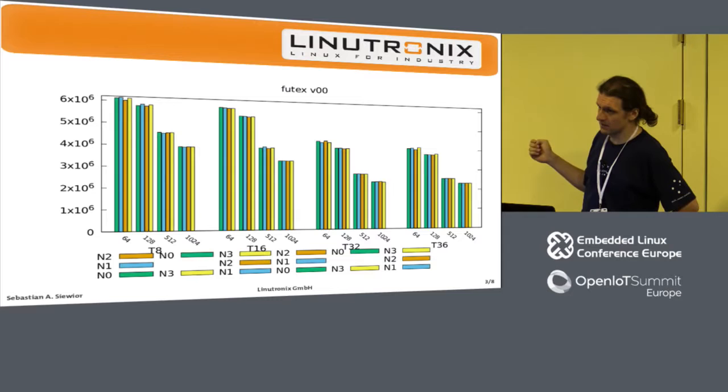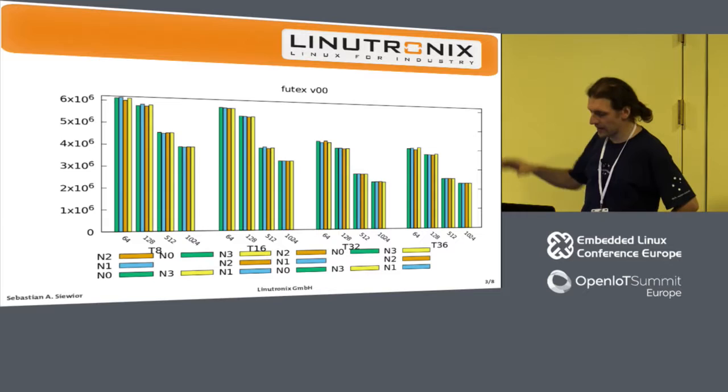You see the NUMA nodes are mostly performing the same way, and it gets slightly worse if you go to 36 threads — down to about three million operations a second.